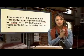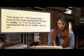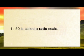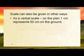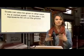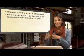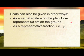The first one represents the measurement on the map, the second one in real life or on the ground. 1 to 50 is a ratio scale. Scales can also be given in other ways. You can have a verbal scale — verbal refers to words. You can have a fraction 1 over 50, and these all relate to that ratio of 1 to 50.